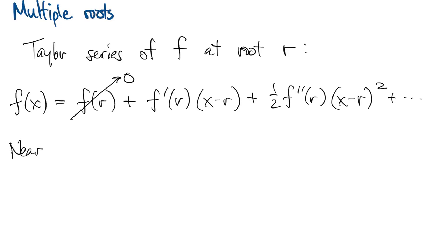That means that if we're close to r, then the most significant term is that linear term. So the function looks like that, unless that term is also zero.